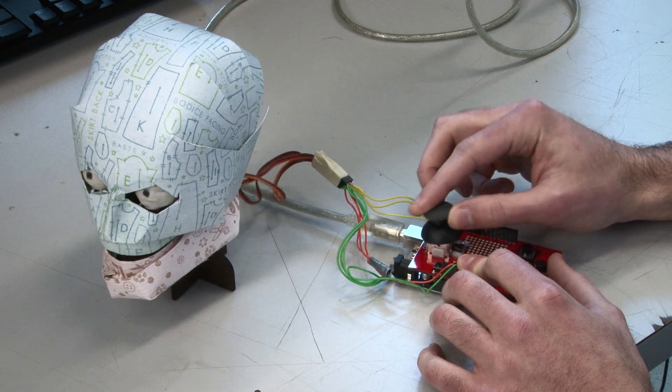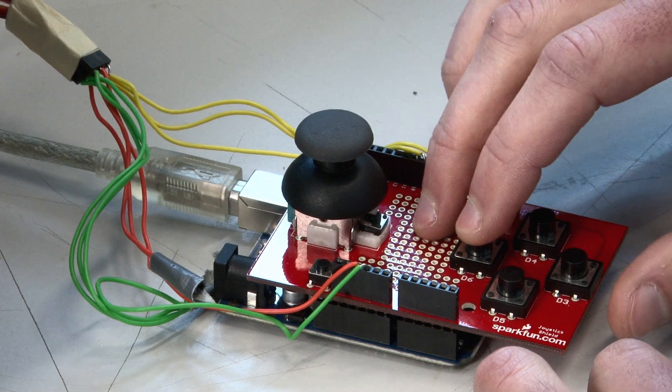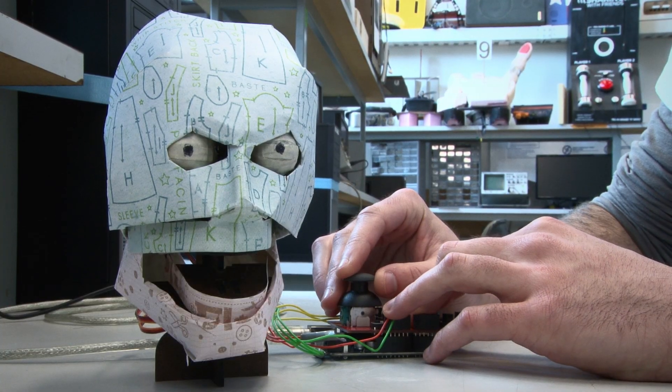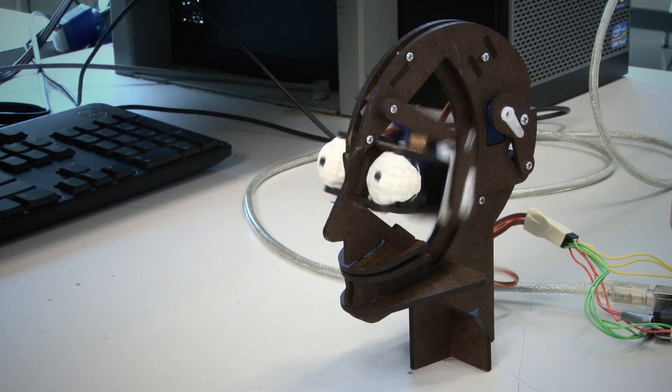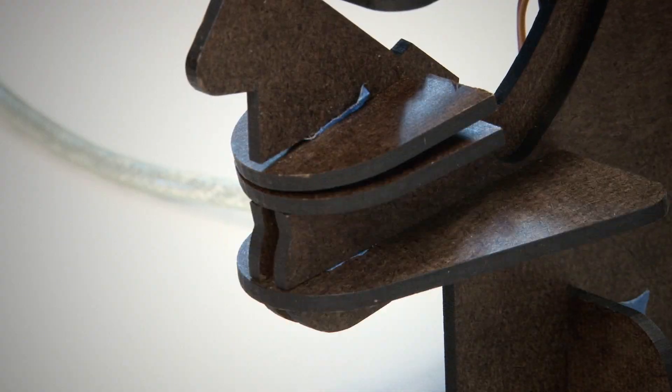TJ is an animatronic. He is basically a remote control electronic puppet. This button controls the mouth. People have said that it's cute. People have said that he's creepy. Here's what he looks like underneath the paper skin. He's got three servos controlling the eyes and the mouth.